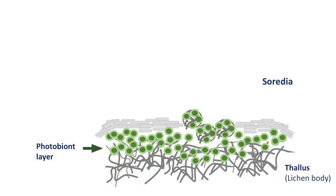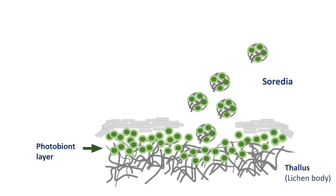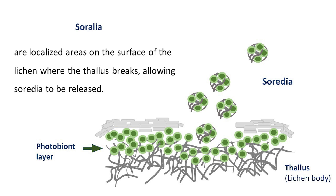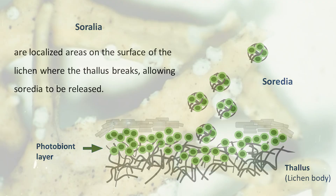Soredia typically form within the photobiont layer and emerge through cracks, pores, or disintegration of the thallus surface. In some lichen species, soredia may appear anywhere on the lichen body, while in others their production is restricted to specific areas known as soralia, which can vary in shape.